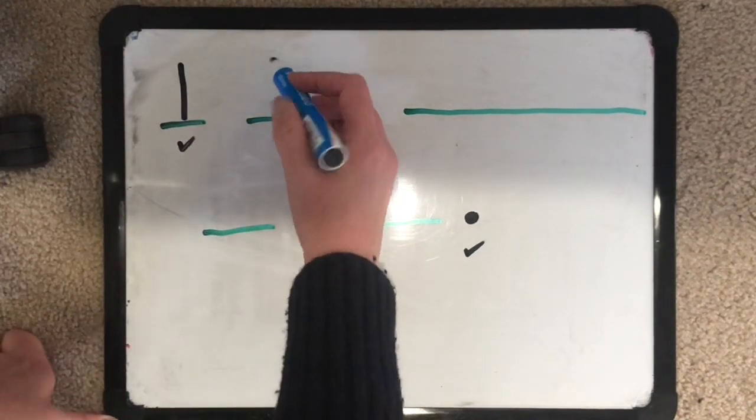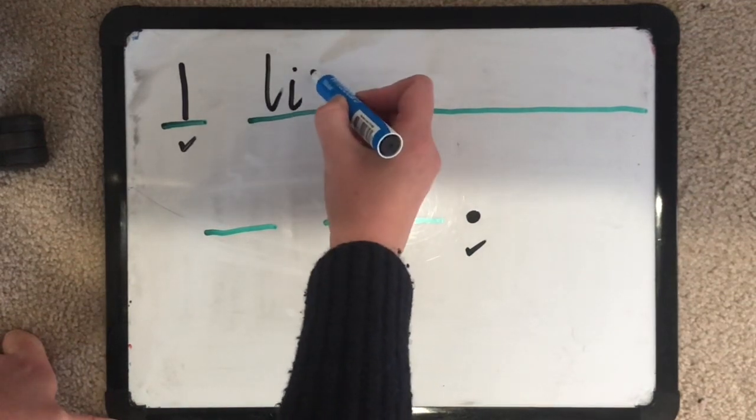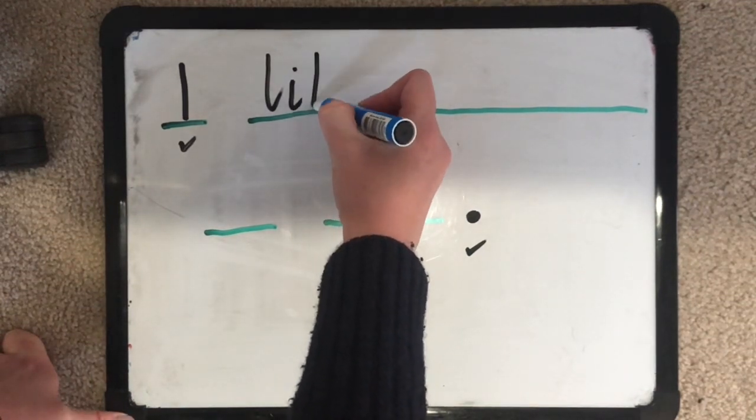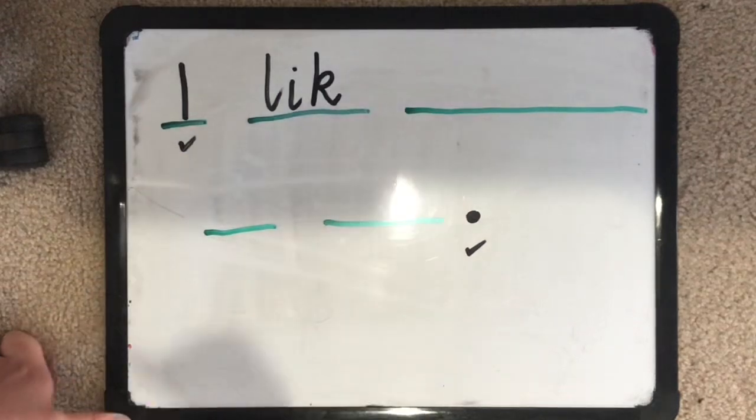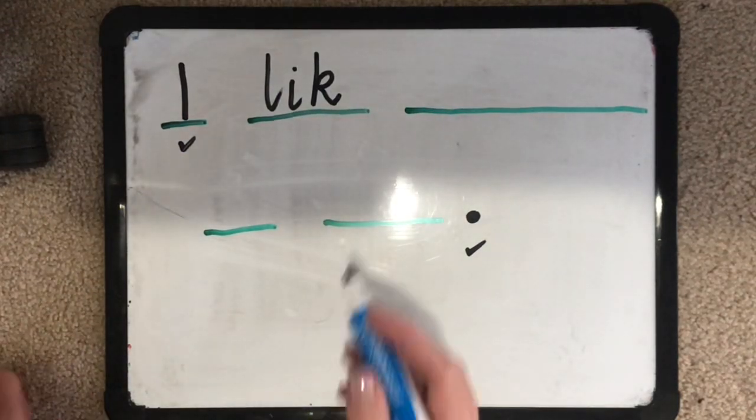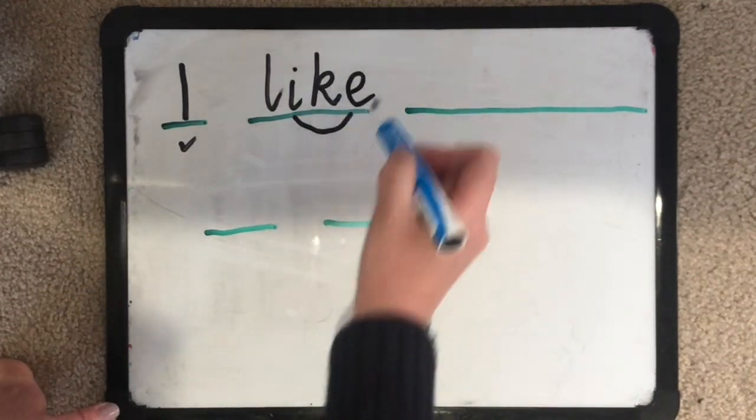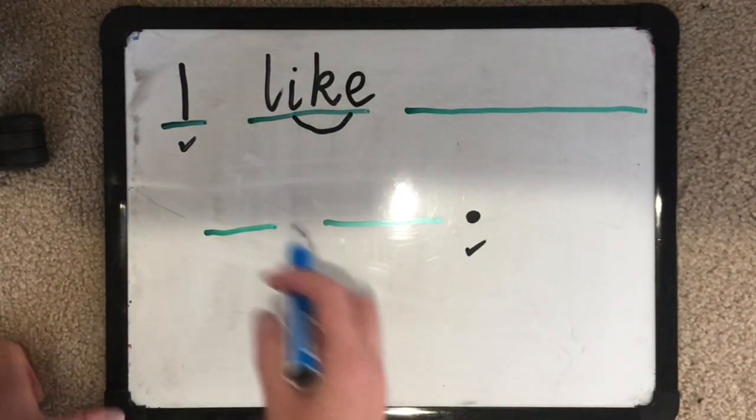I like. Like. And I remember we did split digraphs in smart spelling. I'm pretty sure I something E makes an I sound. So that's a good try.